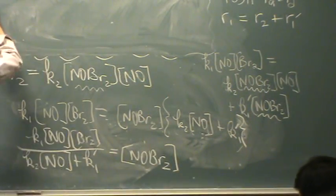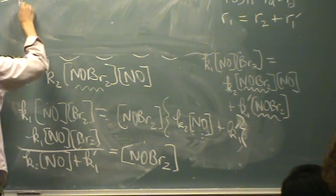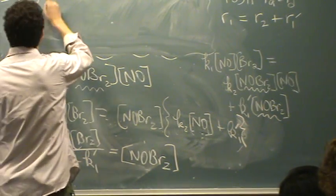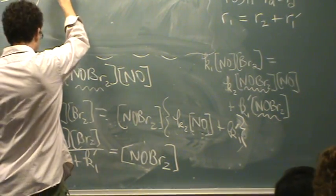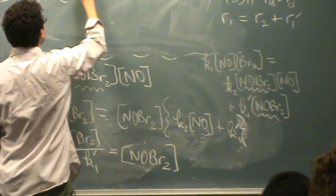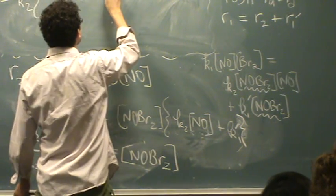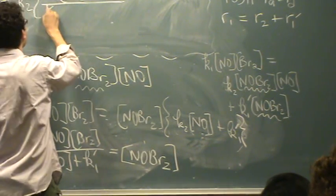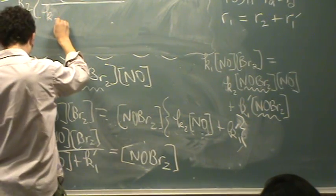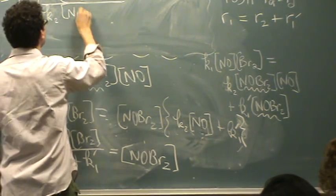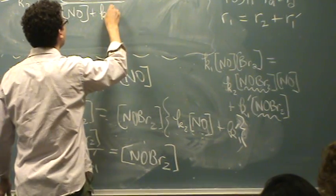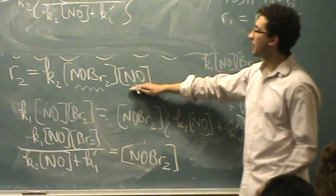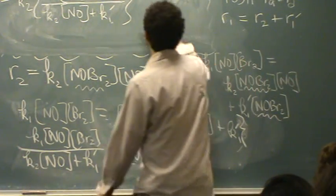So, I'm going to rewrite rate 2 up top. Rate 2 equals K2 and I'm going to write that whole mess. I'll put it in braces. K1 times NO times BR2 divided by K2 NO plus K1 prime. That's the whole thing in braces and now times the remaining NO that was originally there.